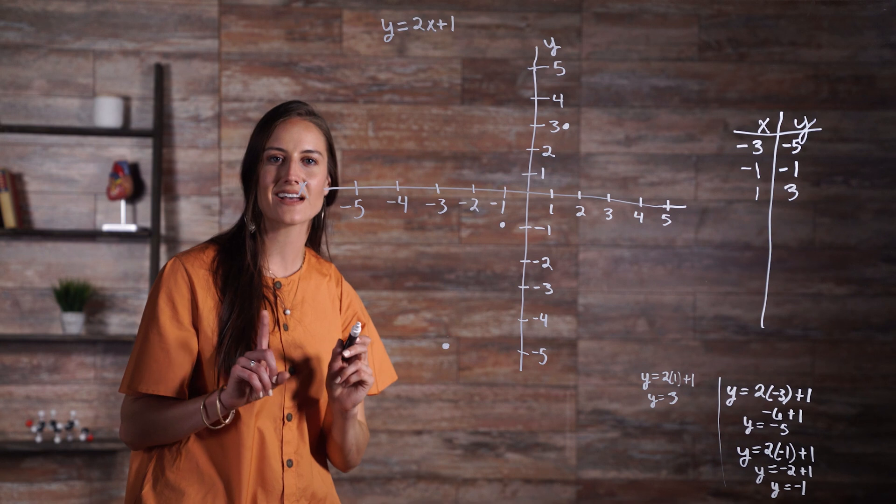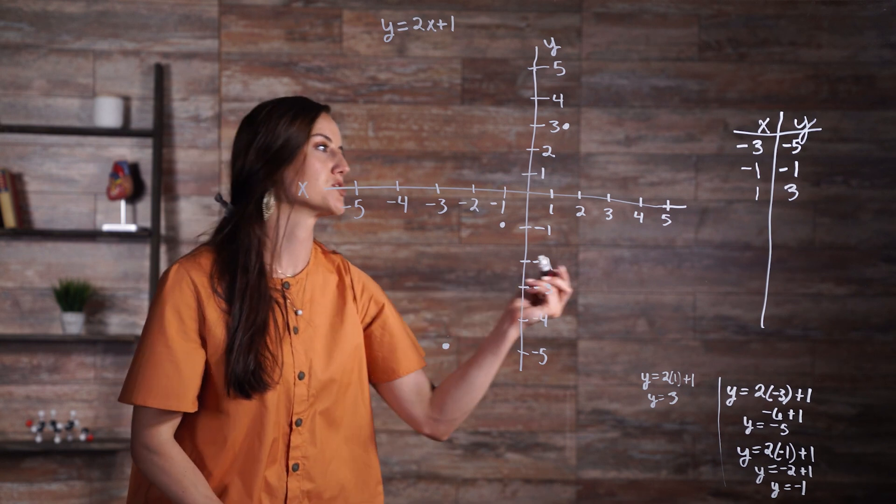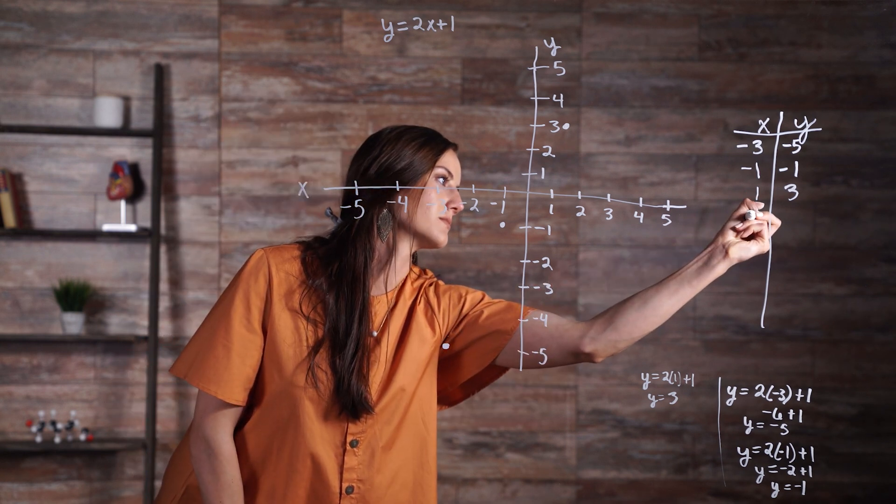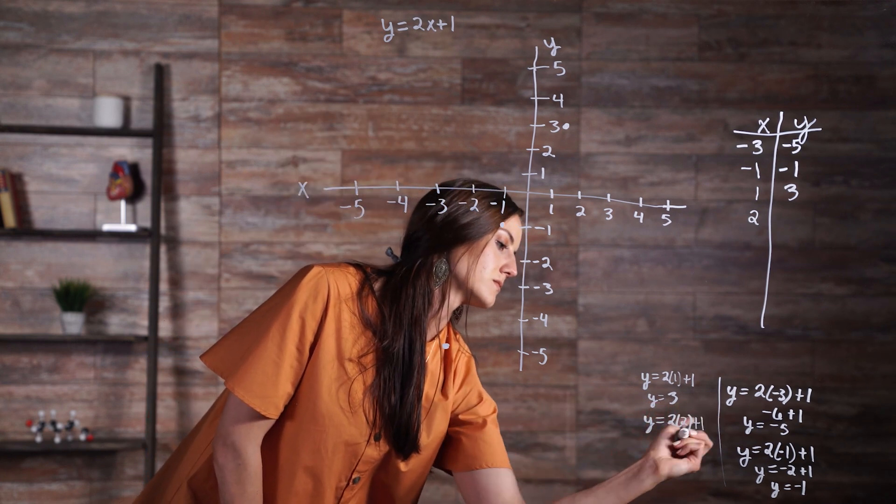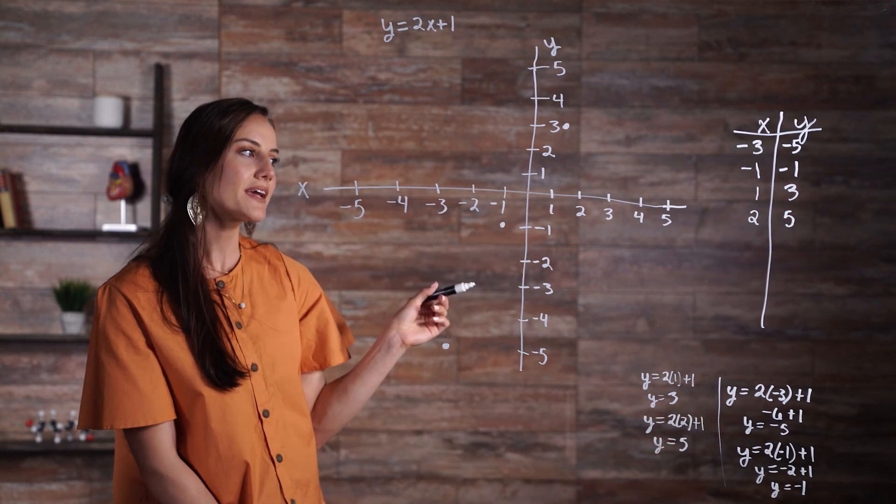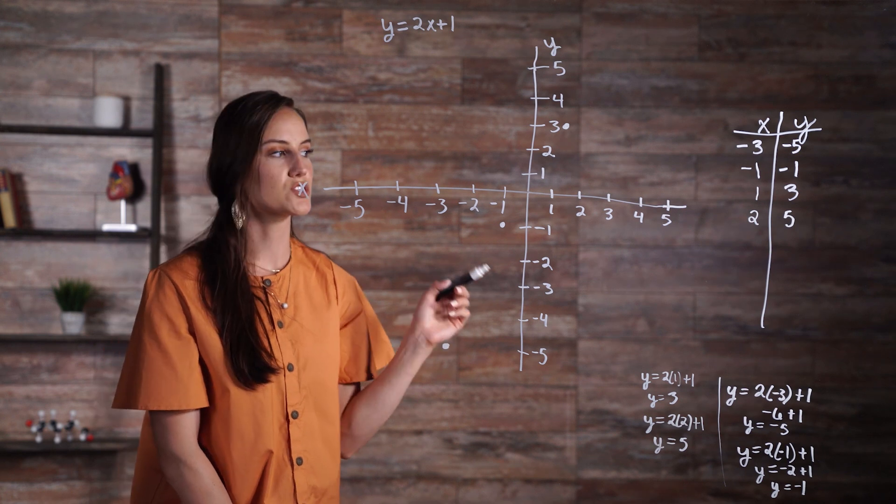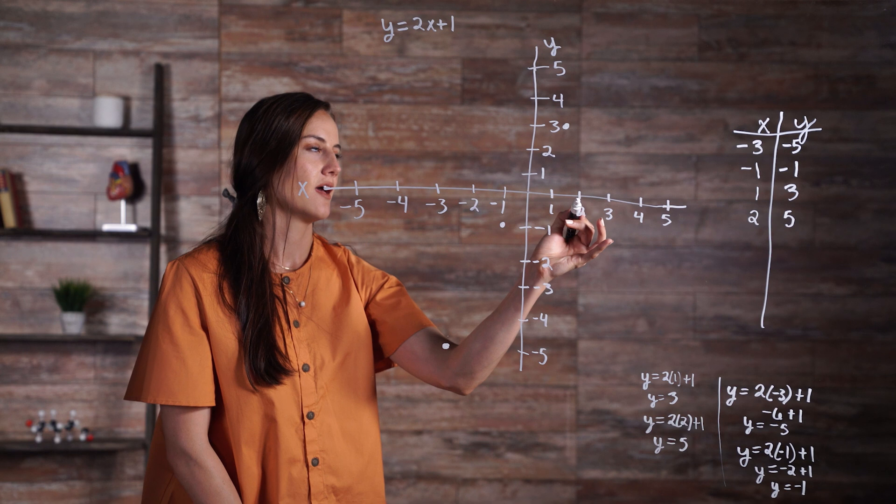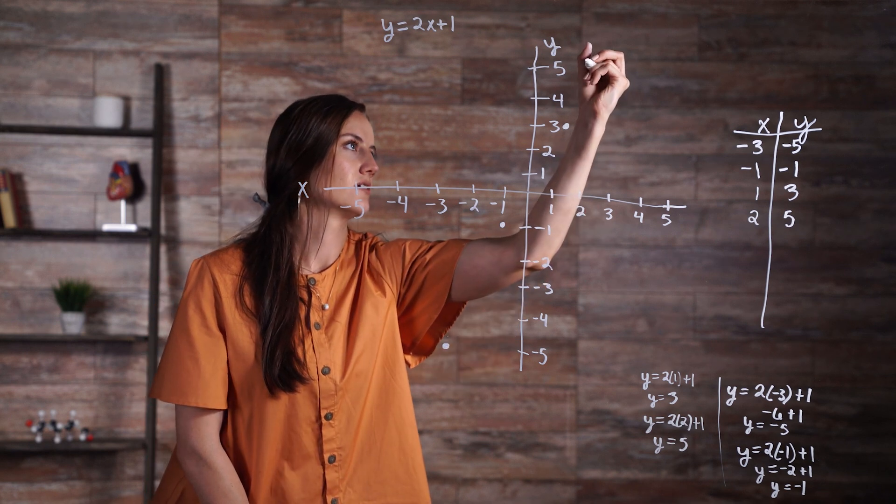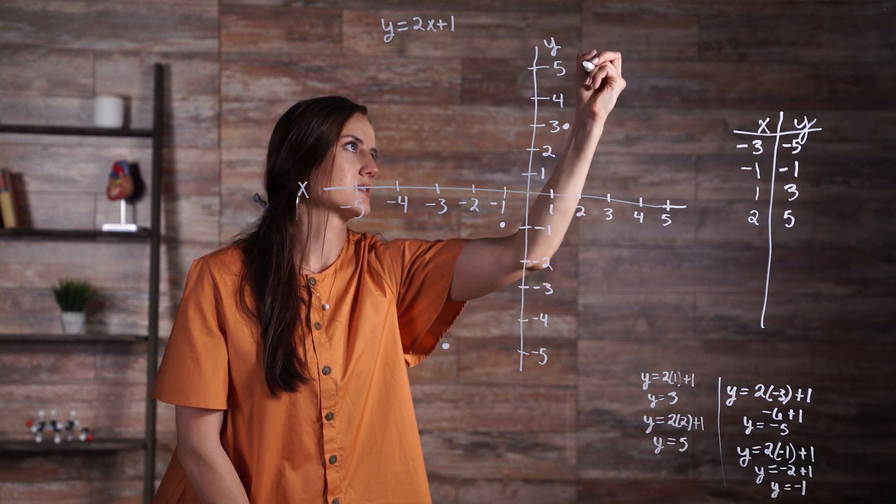We'll finish off with an x value of 2. So we put 2 in our x column, and then plug it into our equation. All right, so that gives us our next set of coordinates, which is 2, 5. So we find 2 on our x-axis, and then go all the way up to 5 on our y-axis.